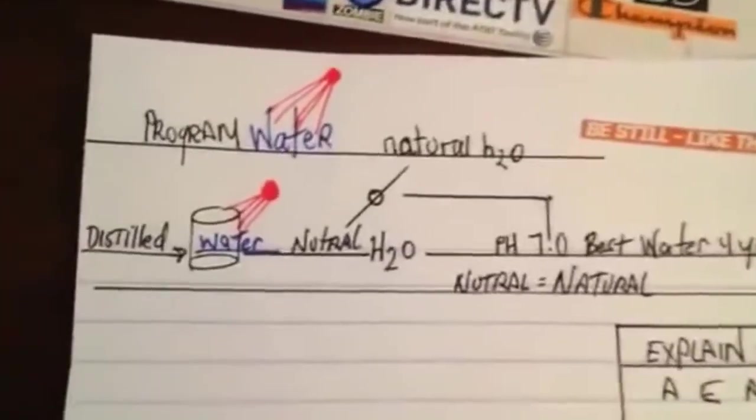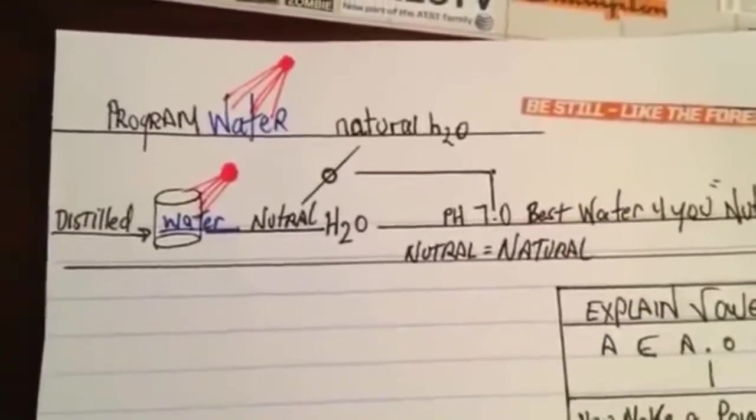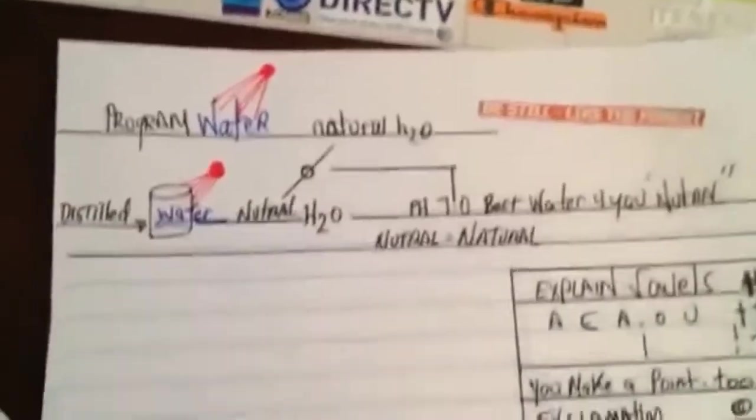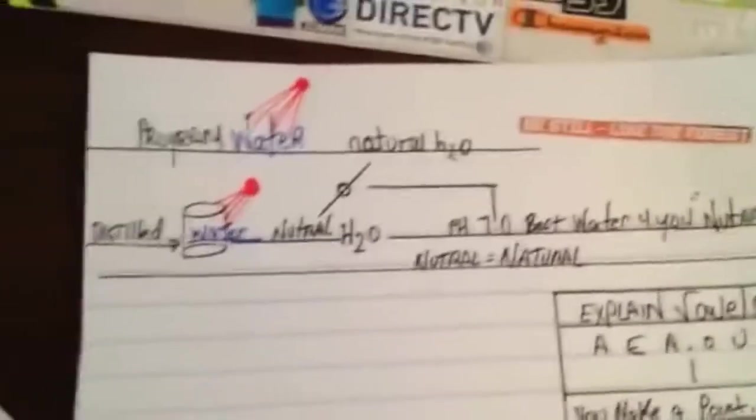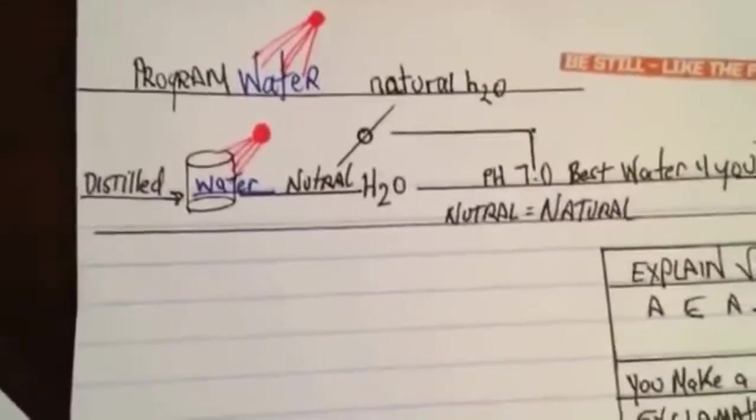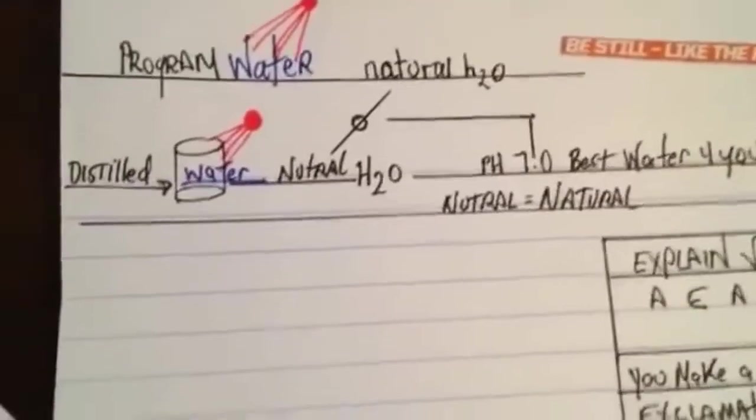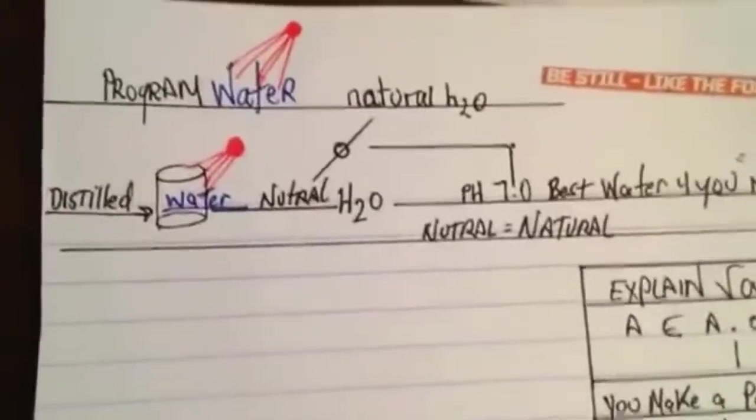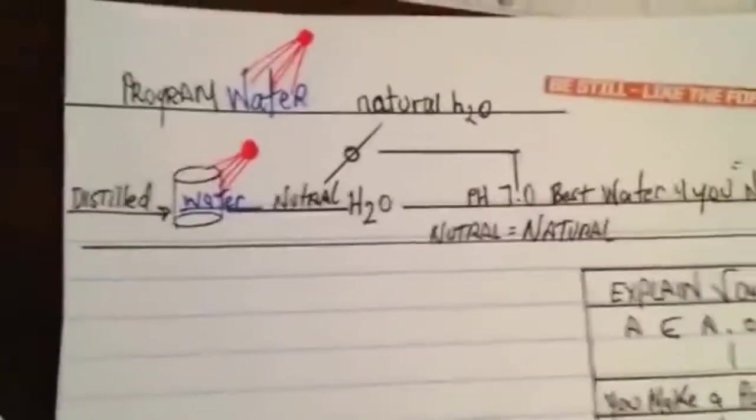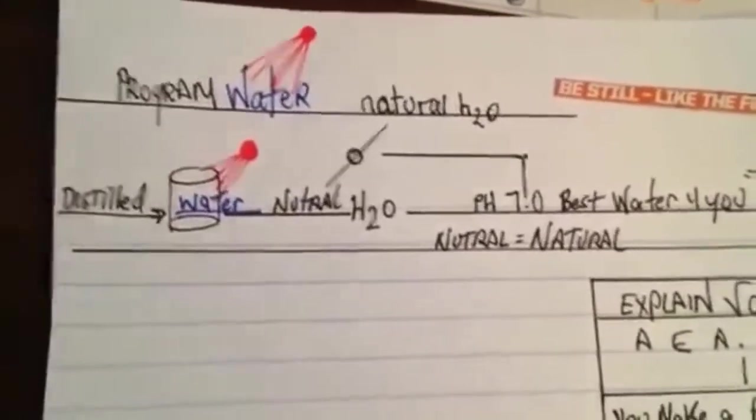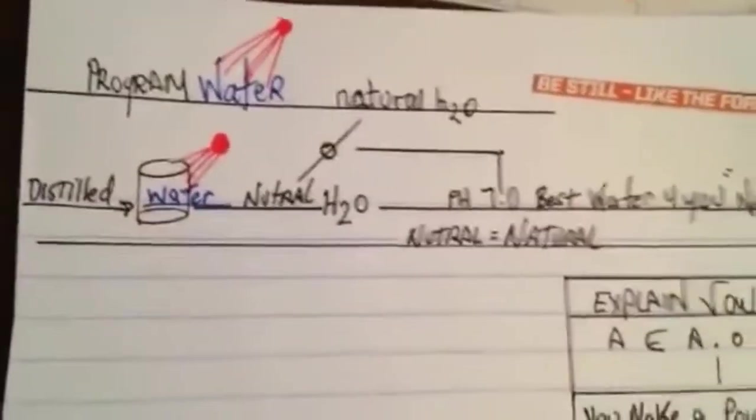The only reason bacteria isn't eating you alive is because you have a pH level on your skin. Your tummy is only able to digest food because of this acid. If you drink too much alkaline water it goes into your tummy and defeats the purpose. Cancer is killed by alkaline when you inject it into the cancer directly.